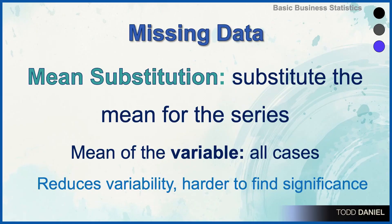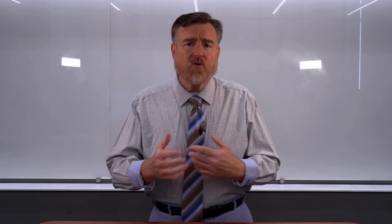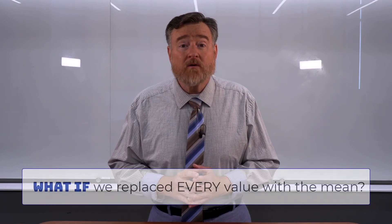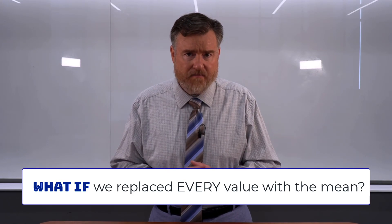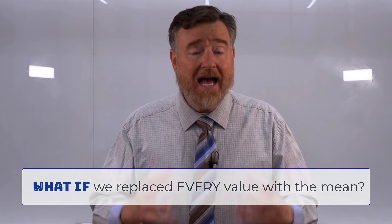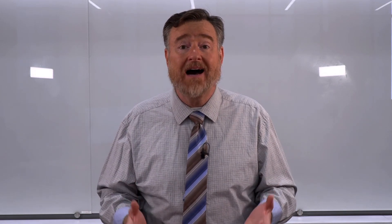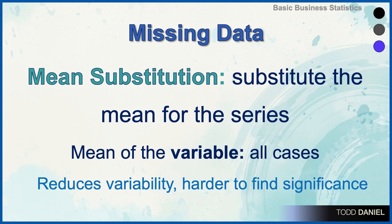Another way to deal with missing data is using mean substitution — the old way of addressing missing data. You would simply substitute the mean for that variable across all other cases. But think about what would happen if instead of replacing two or three missing values with the mean, you replaced every value with the mean. All of the scores would collapse to a constant and we would have zero variability. If we were using a test like ANOVA, we couldn't make it run because there is now no variance. When you use mean substitution, you reduce the variability in your data set, and that's why it is generally discouraged.